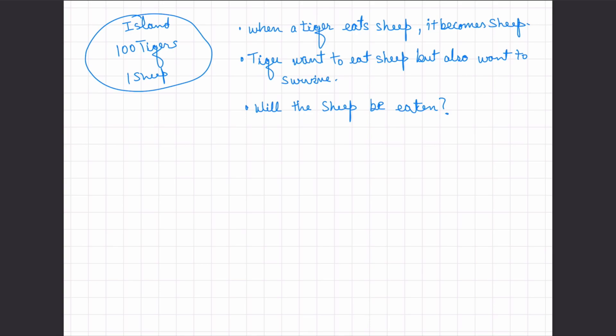As a result, tigers want to eat sheep, but they will also want to survive. So they're confused whether they should eat a sheep or not. Because if they eat a sheep, they'll become sheep themselves and then they might be eaten up by other tigers.